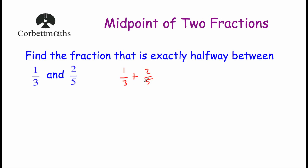The denominators are three and five, and the lowest common multiple of three and five is fifteen. So let's have a common denominator of fifteen. To get from three to fifteen we multiply by five, so we multiply the numerator by five. One-third is the same as five-fifteenths.